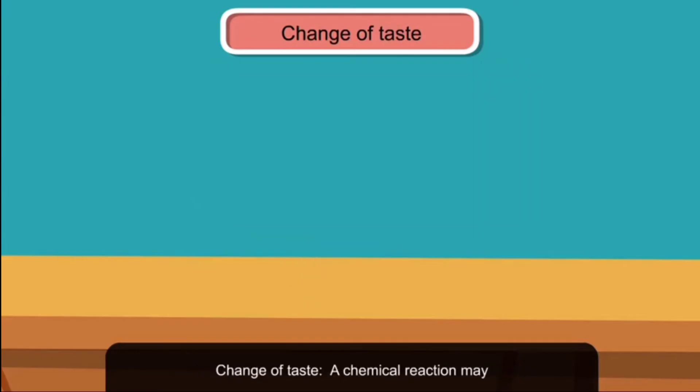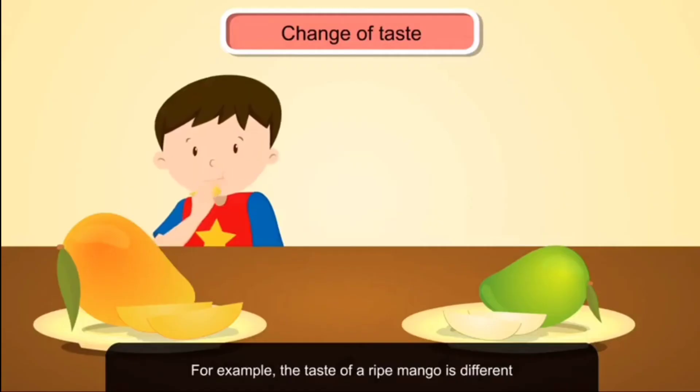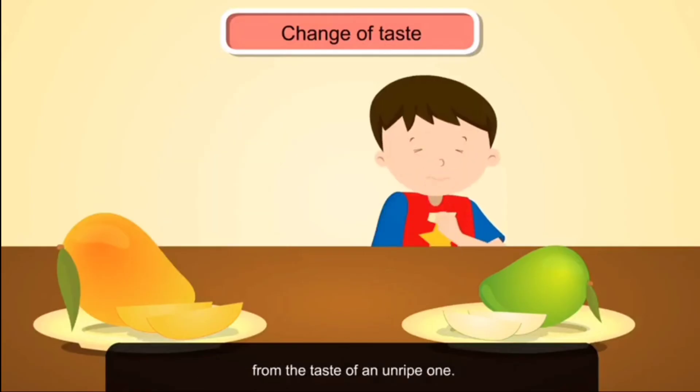Change of taste: A chemical reaction may change the taste of the edible reactants. For example, the taste of a ripe mango is different from the taste of an unripe one. Note that ripening of a mango is a chemical reaction.